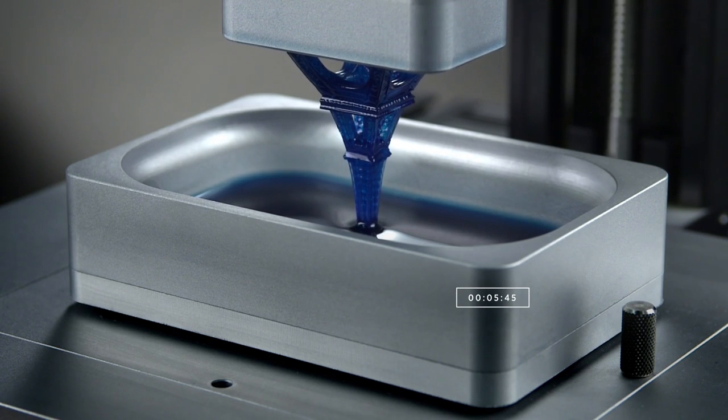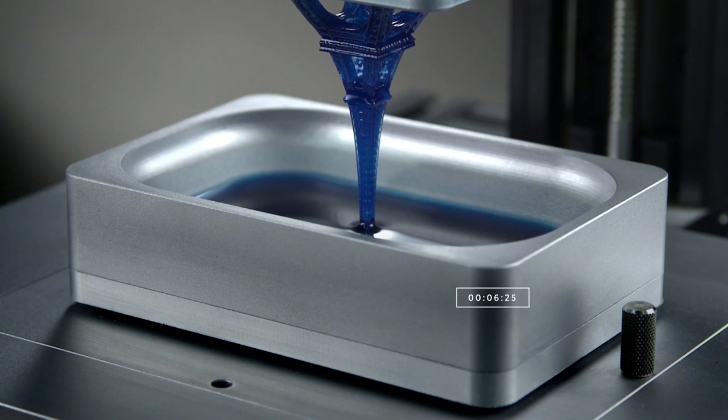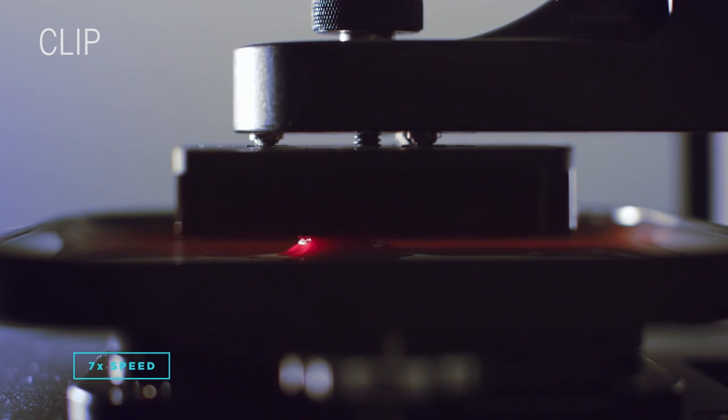By balancing liquid, light, and air, 3D printing technology is getting smoother and faster. The new process is called continuous liquid interface production, or CLIP for short.